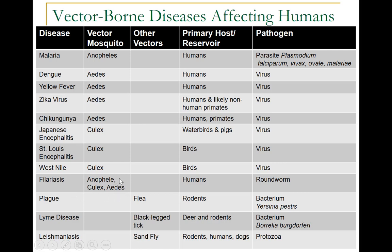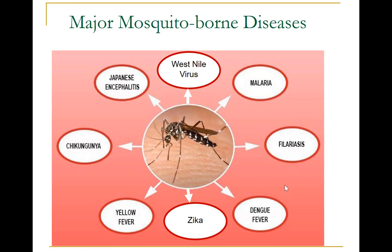Plague, Lyme disease, and leishmaniasis do not have mosquito vectors but have other vectors: for plague it is a flea, for Lyme disease it is the black-legged tick, and for leishmaniasis it is the sand fly. The primary host or reservoir is humans in some cases, humans and primates in others, and birds or rodents in some cases. The dominant pathogen is virus or bacteria in many cases, but in others it is a parasite — for malaria and leishmaniasis it is protozoa, and for filariasis it is roundworm.